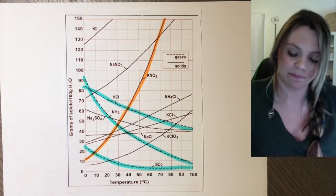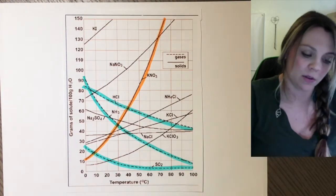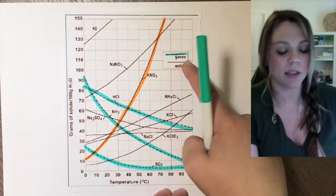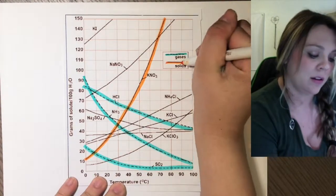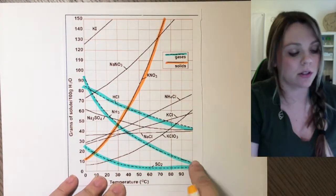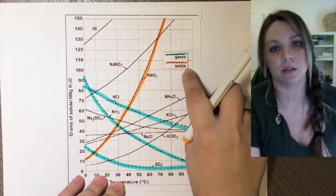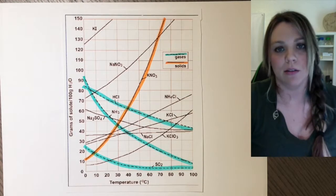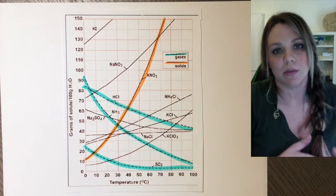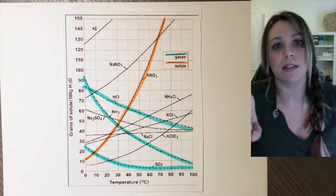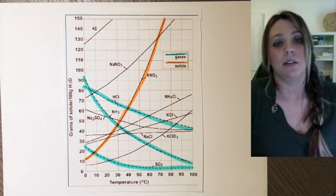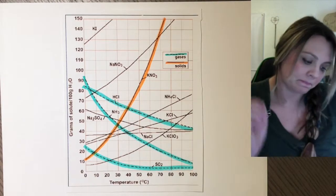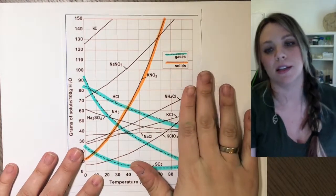If you notice, the things that go down in solubility as temperature goes up are gases. The things that go up as temperature also increases are solids. You should be able to identify pretty easily: if the solubility of a substance is going up as the temperature rises, it's a solid. If the solubility is going down as temperature rises, it's a gas. Make sure you understand that difference.